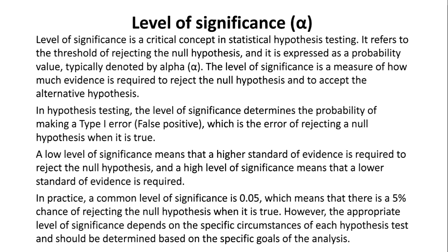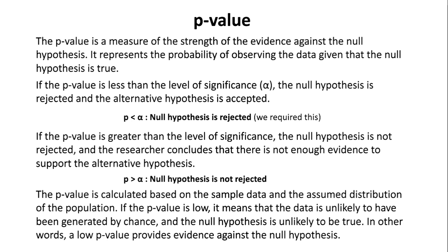P-value: the p-value is a measure of the strength of the evidence against the null hypothesis. It represents the probability of observing the data given that the null hypothesis is true. If the p-value is less than the level of significance alpha, the null hypothesis is rejected and the alternative hypothesis is accepted.